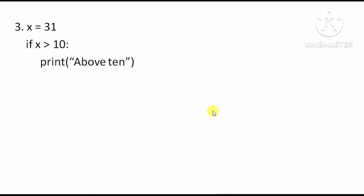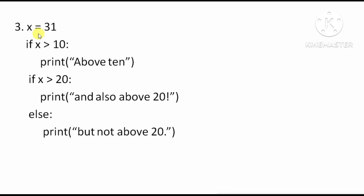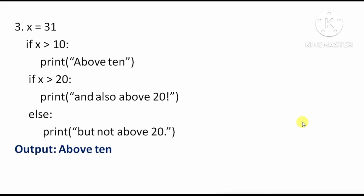Next program: here x has the value 31. Since x is greater than 10, 'above 10' will print. Then the next check: 'and also above 20' will also print. But 'a' will not print. So the output will come in this way.